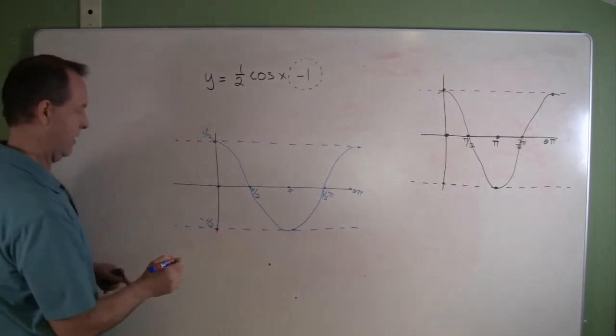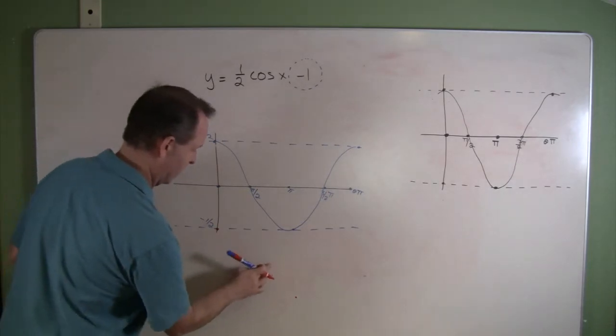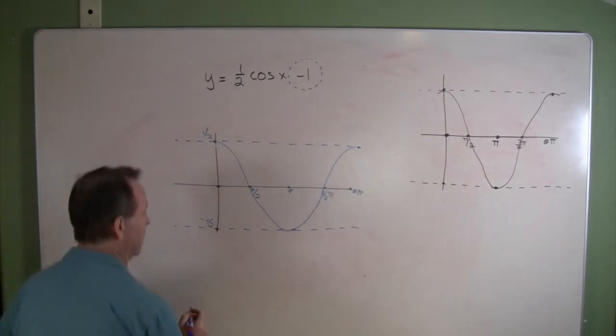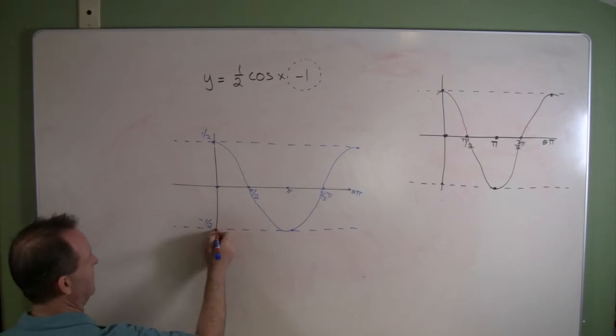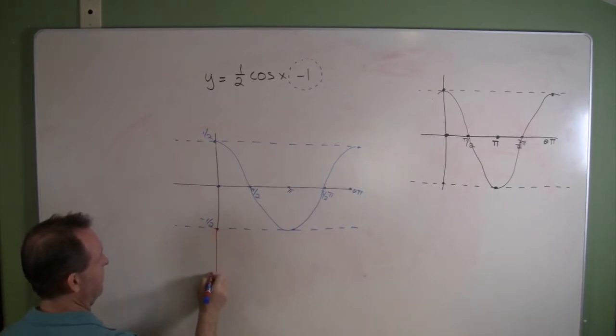All right. Let's see how I can graph this a little bit here, because I got some of my points all off. Let's do this, folks. Let's extend this graph. Let's make this out at a one and make this at a negative one and one-half.